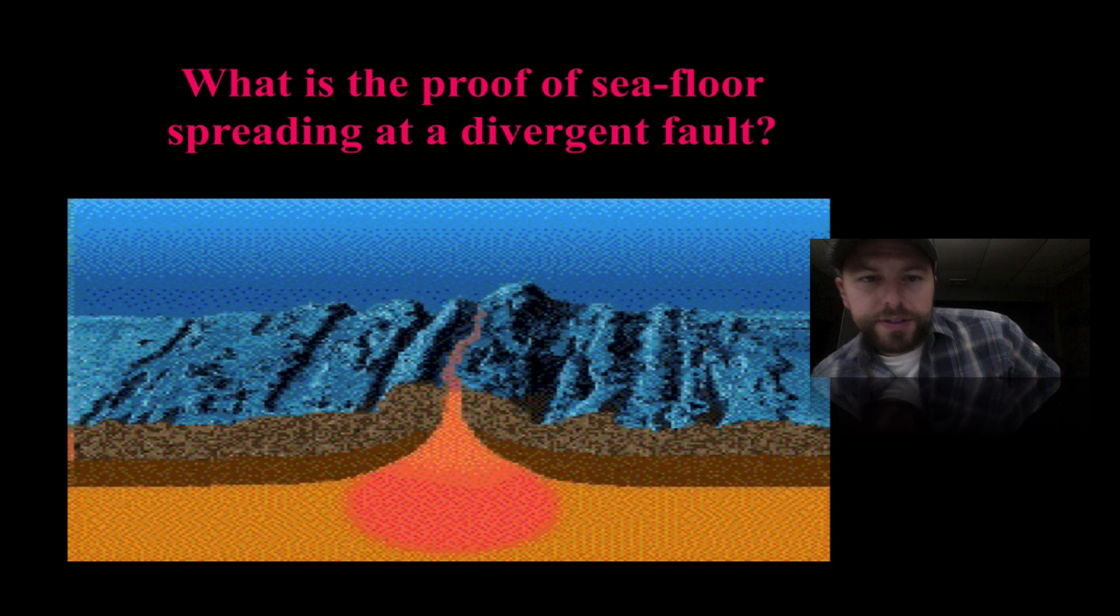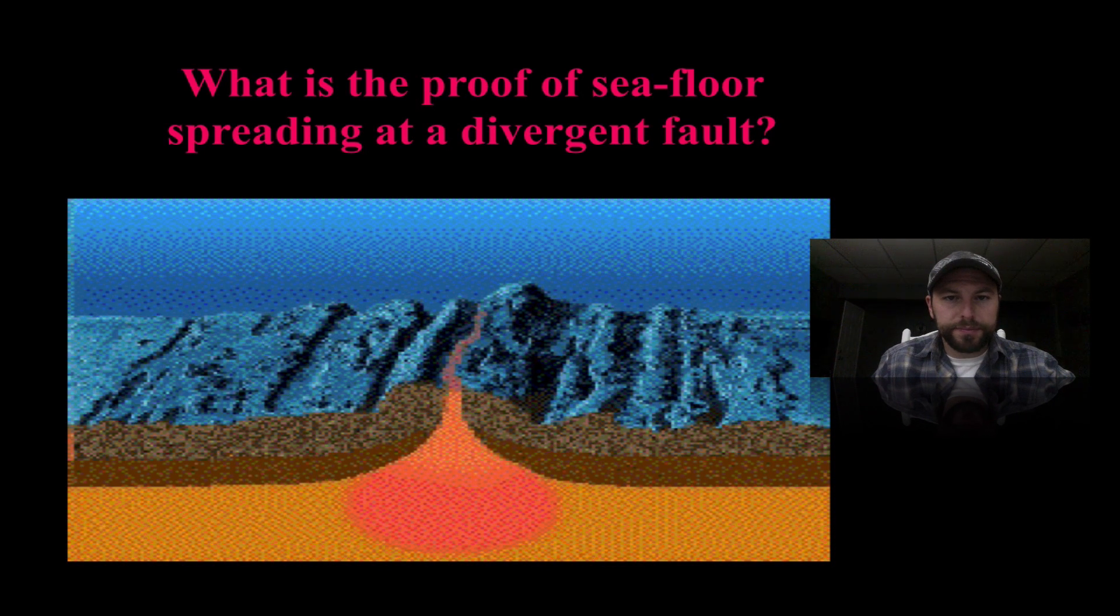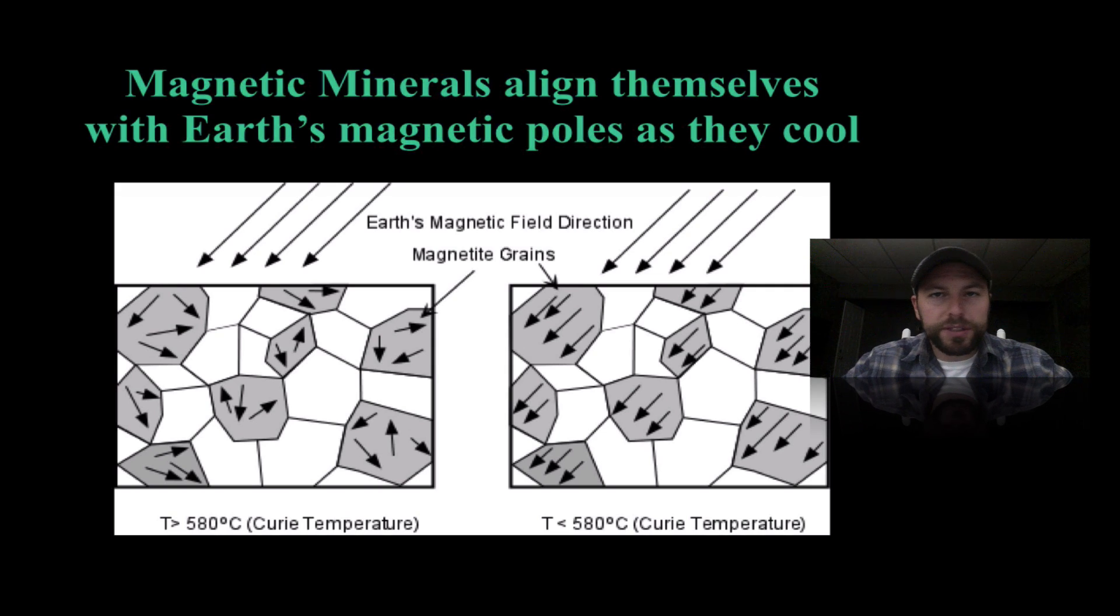We have evidence of seafloor spreading at divergent plate boundaries. What we notice is that magma comes up to the surface. As that magma cools and hardens, the minerals will actually align themselves where the magnetic grains align with Earth's magnetic field. For instance, right now we have that northern field, so you'll actually see the direction of the magnetite grains align themselves with that. If Earth's magnetic field changes, the newer ones will change direction.